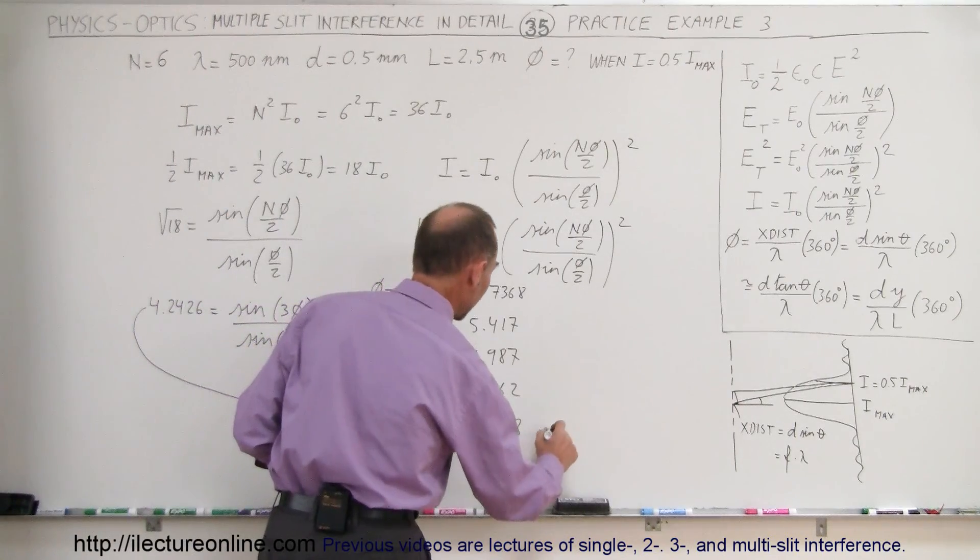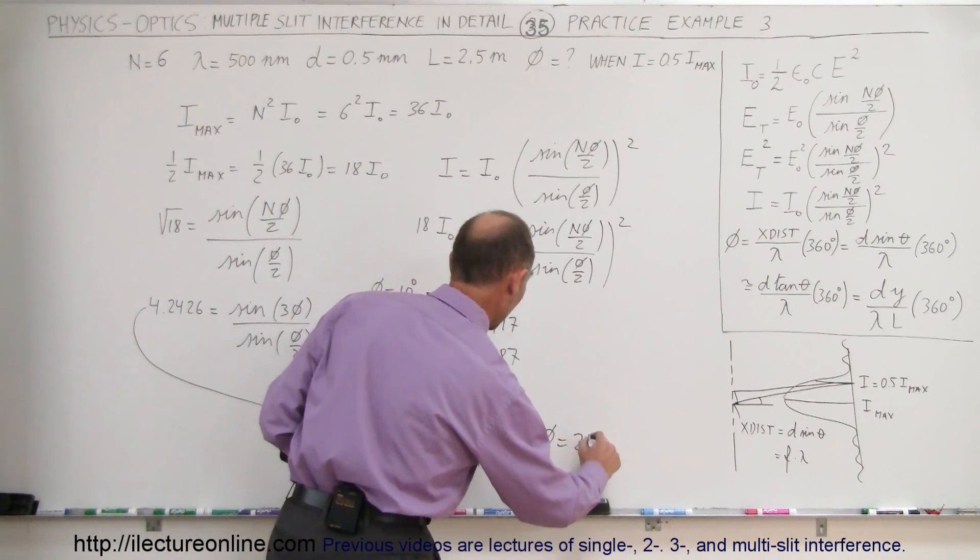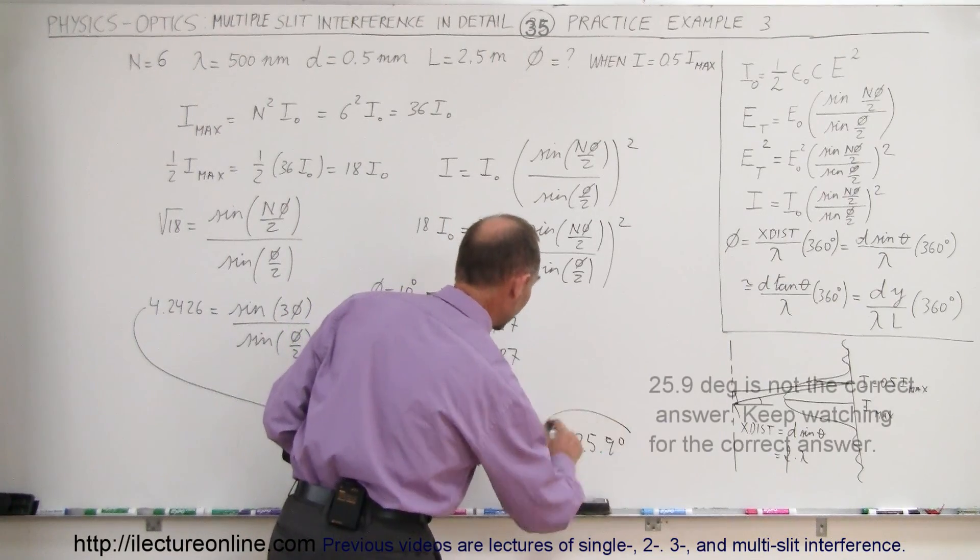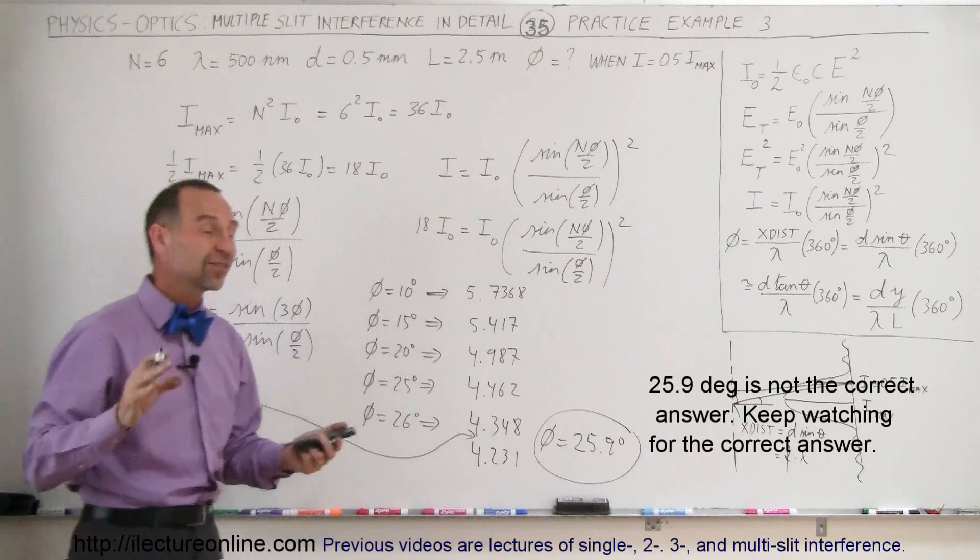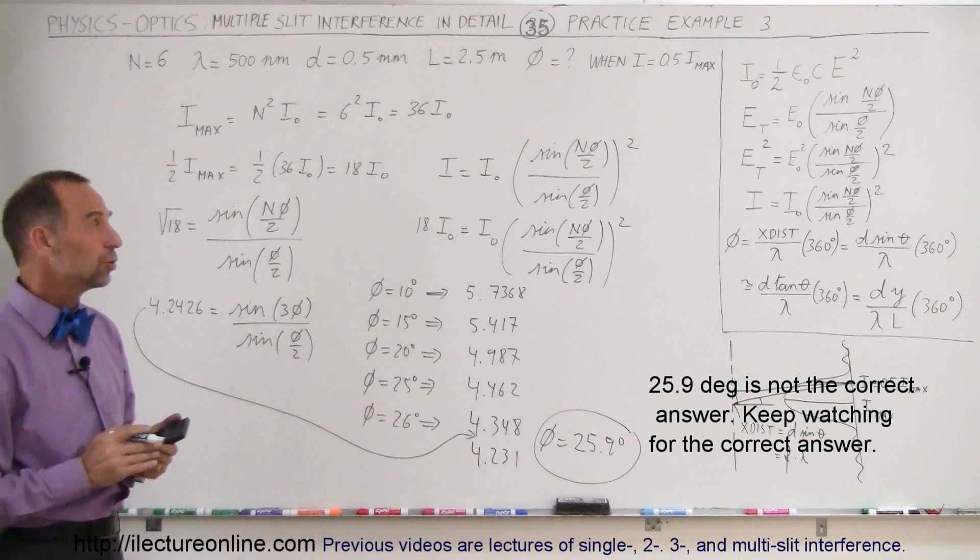My answer is that phi is very close to 25.9 degrees, plus or minus a small amount. So that's how we do that.